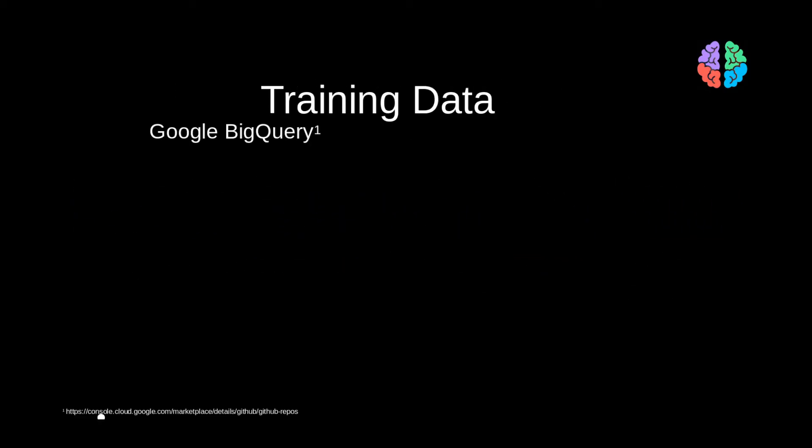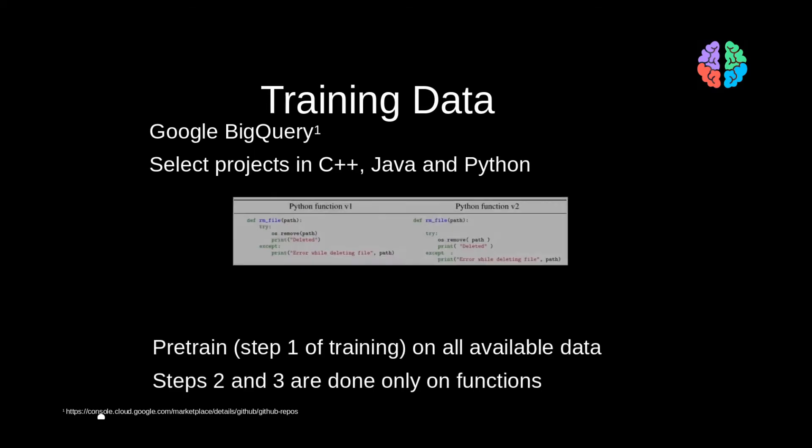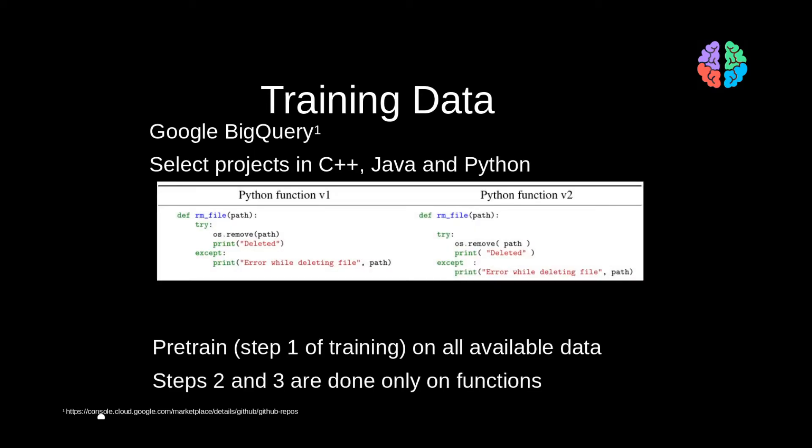For training data, they use Google's BigQuery. They only keep C++ Python and Java files and discard the rest. For the first step, which is pre-training, they use all the available code.